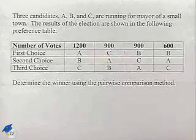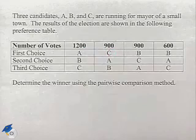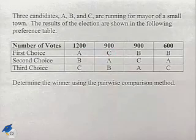Now we're going to look at another voting method. Three candidates, A, B, and C, are running for mayor of a small town. The results of the election are shown in the following preference table.